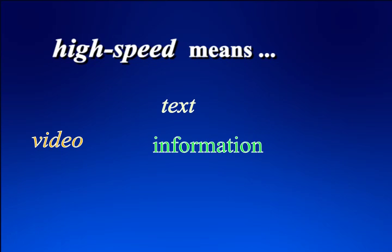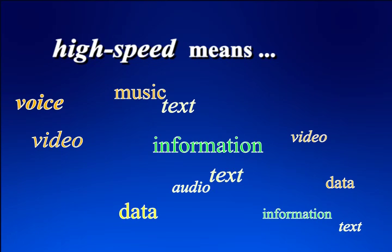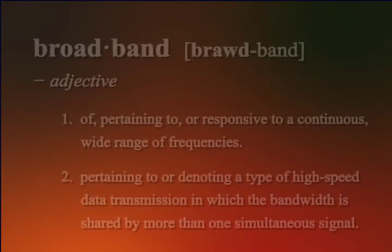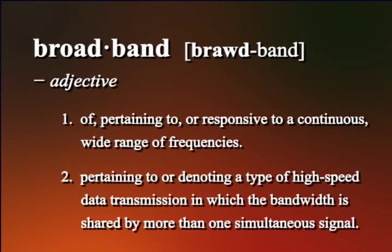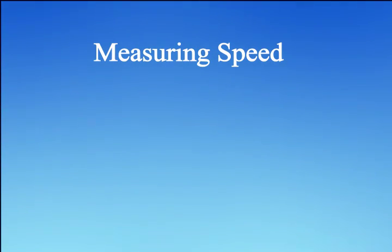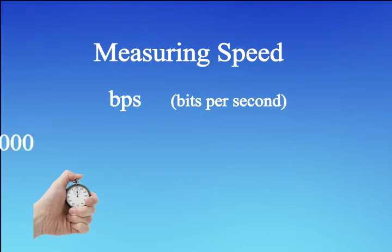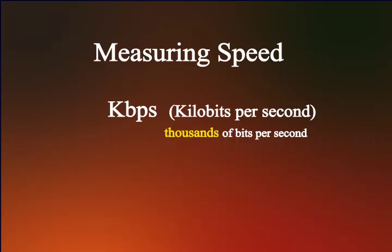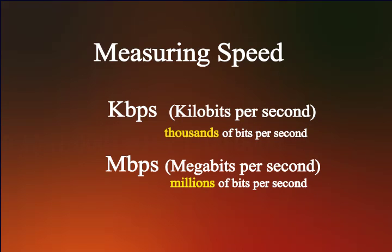High-speed internet allows large amounts of information and data to move quickly over the world wide web for a reliable, seamless, real-time experience. In general, broadband refers to telecommunication where a wide band of frequencies is available to transmit information. Broadband is often measured in terms of bits per second — typically you see either kilobits per second or megabits per second describing the speed of a broadband connection.